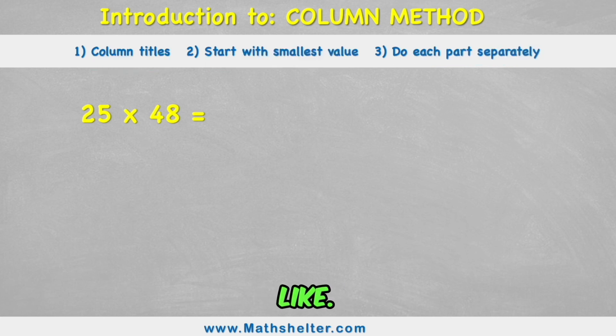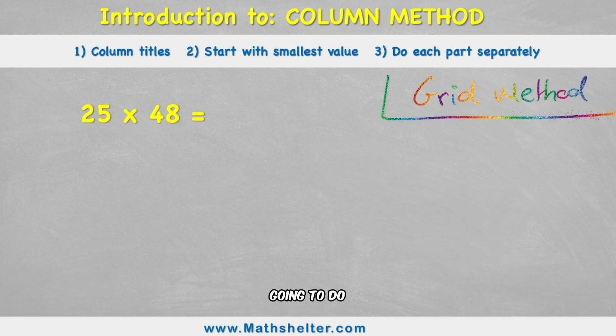Let's see what that looks like. Now, for those of you that have followed along this series, you will know that before column method, we have grid method or box method. So what I'm going to do is I'm going to do grid method on this side here at the same time so you can see how they're linked.